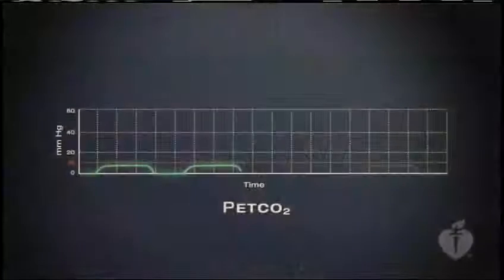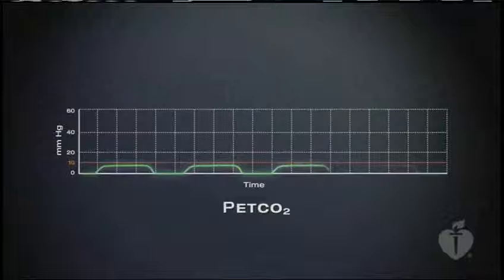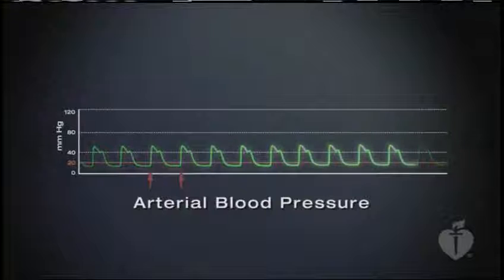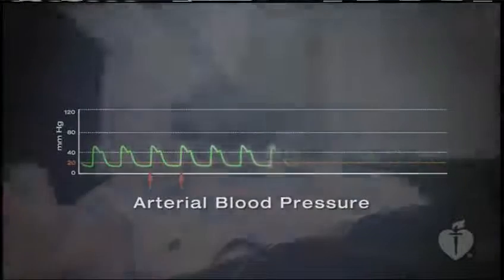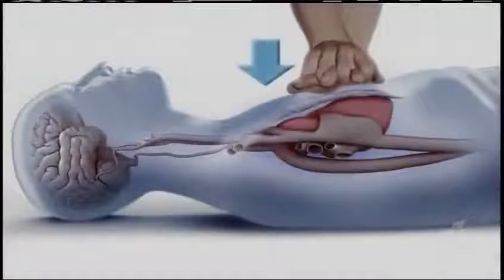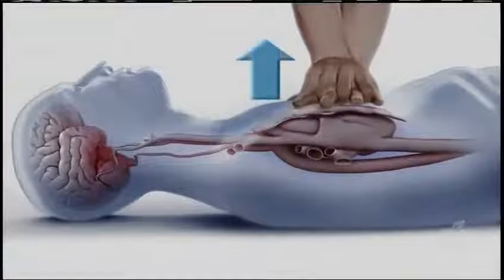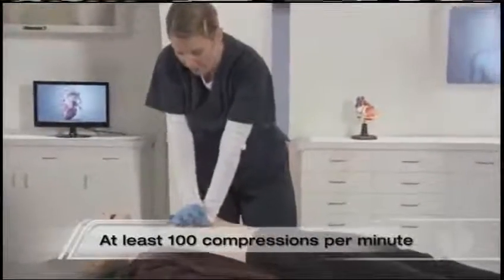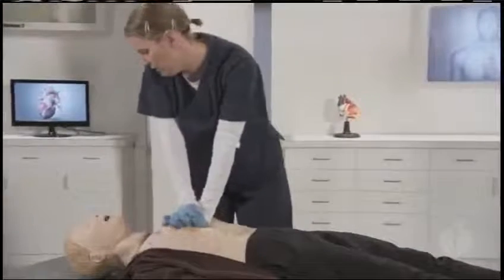Because coronary perfusion pressure measurements are not readily available during a resuscitation attempt, healthcare providers can monitor CPR quality with waveform capnography and intra-arterial relaxation pressures. Patients with an end-tidal CO2 reading of less than 10 millimeters of mercury may not achieve ROSC. For intra-arterial relaxation pressures, a reading of less than 20 millimeters of mercury indicates ineffective compressions. To perform high-quality chest compressions, push hard and push fast — compress the chest at least 2 inches and allow complete chest recoil after each compression, and deliver compressions at a rate of at least 100 per minute.